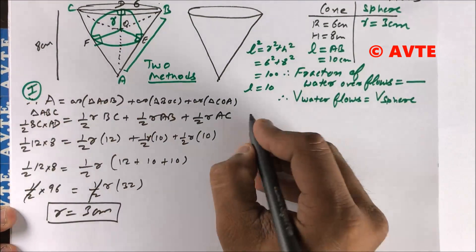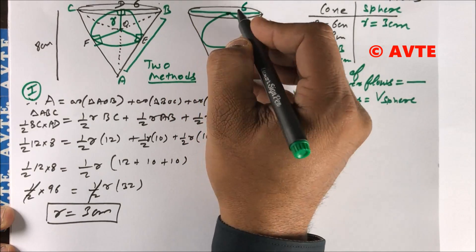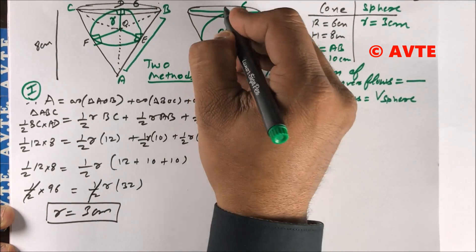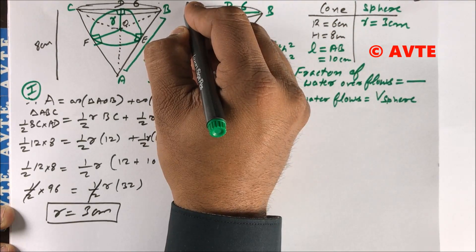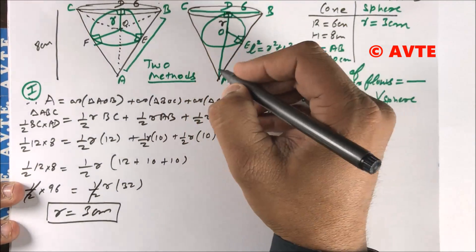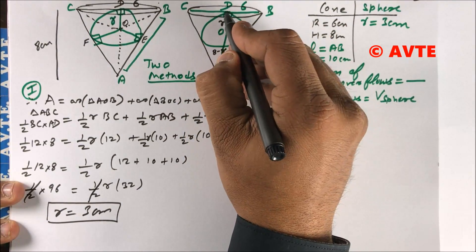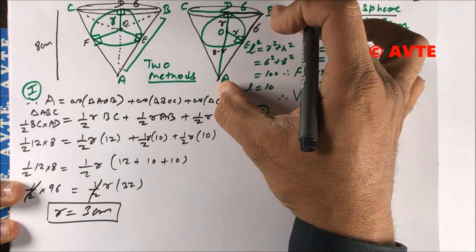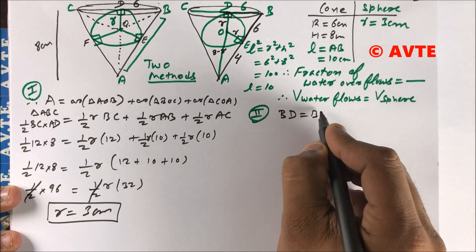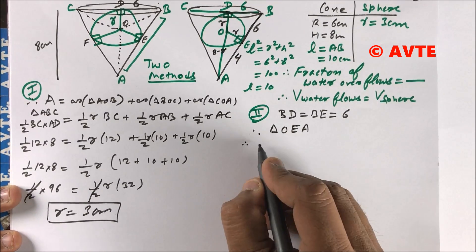The second method to find the radius: here you have the ball, with radius R. This is 90°, this is also 90°. Point A is at the top, B and C at the base, and E is where the sphere touches the slant. The whole height AD is 8, so this segment is 8 minus R, and this tangent segment is also 6. Since the whole slant is 10, this part is 4. The length of two tangents drawn from an external point to a circle are equal, so this is also 6.